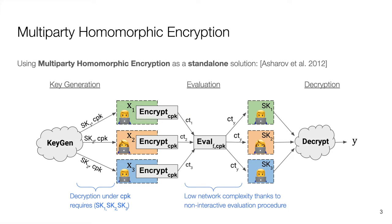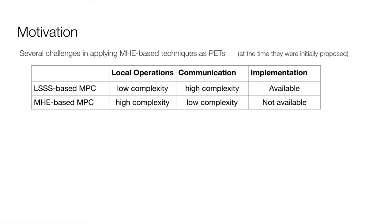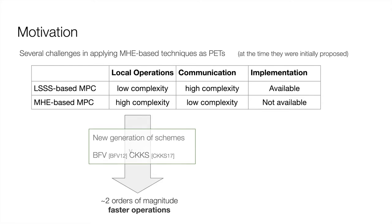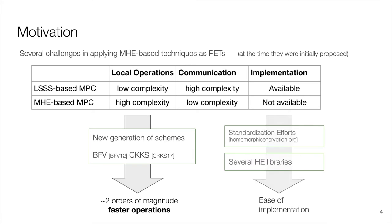One of the main characteristics of the MHE-based MPC protocol is its low communication complexity, thanks to the non-interactive evaluation procedure. However, there were still several challenges in applying these MHE-based techniques as practical privacy-enhancing technologies at the time they were initially proposed. First, they represented a total inversion of the CPU cost versus network cost trade-off. Second, there was no implementation of such a solution that was publicly available. But the situation has changed, with a new generation of homomorphic schemes such as the BFV and CKKS schemes that are now much more efficient. In addition, there are now several actively maintained libraries implementing these schemes, as well as an ongoing effort to standardize them. Together, these factors motivate further research around MHE schemes and their applications.